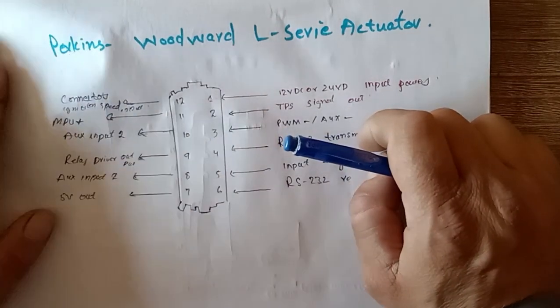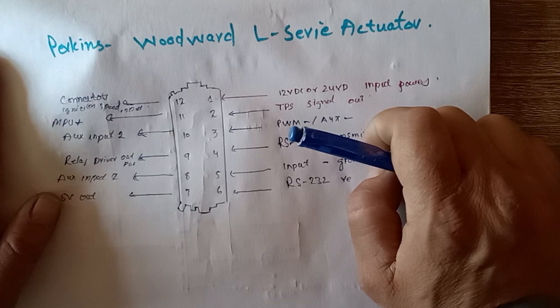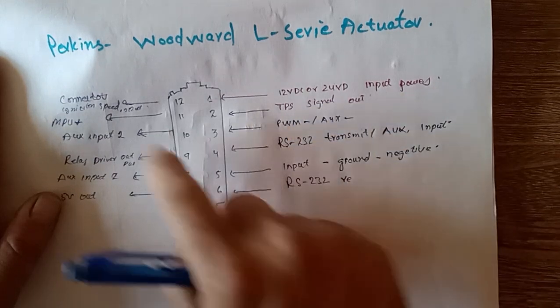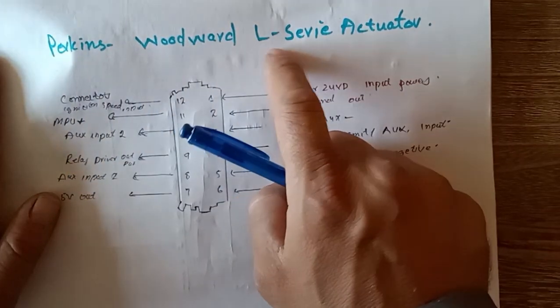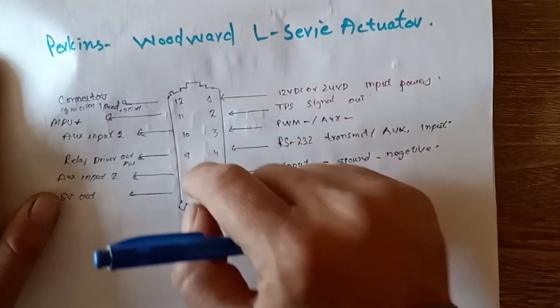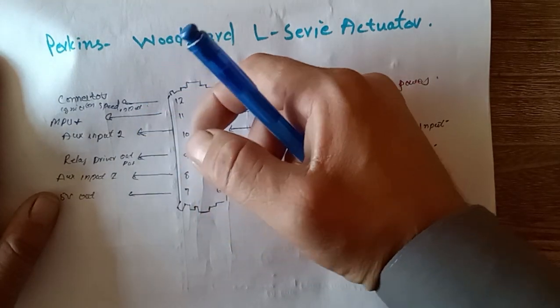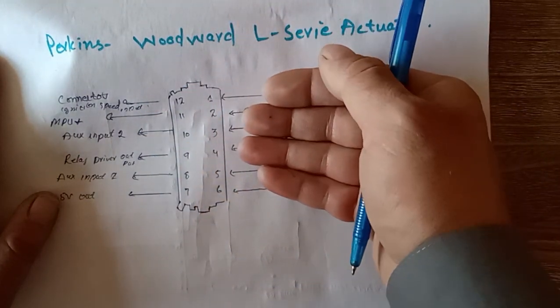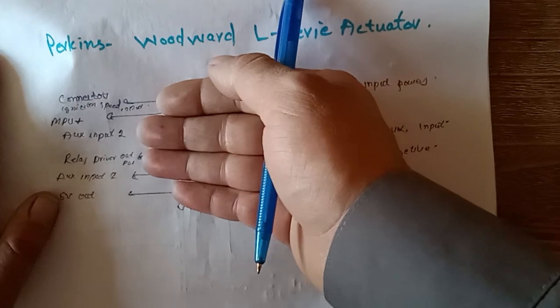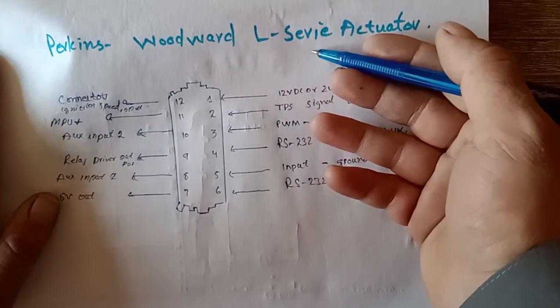First of all, we need to understand about the connection. This Perkins Woodward L series actuator has inside an IC chip that needs to be programmed with the help of special software of Woodward L series actuator with the model numbers.